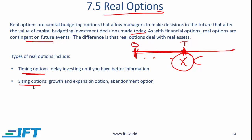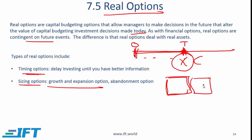Another type is a sizing option — specifically a growth and expansion option. Say you build a factory but don't know what the eventual demand will be. If you believe demand could be very high — so high that your current factory cannot fulfill it — you might spend some money and buy the land right next to it but not build on it. The purchase of that land is like buying an option: if demand takes off, you can exercise the option by building a factory on the adjacent land. This is a growth and expansion option.